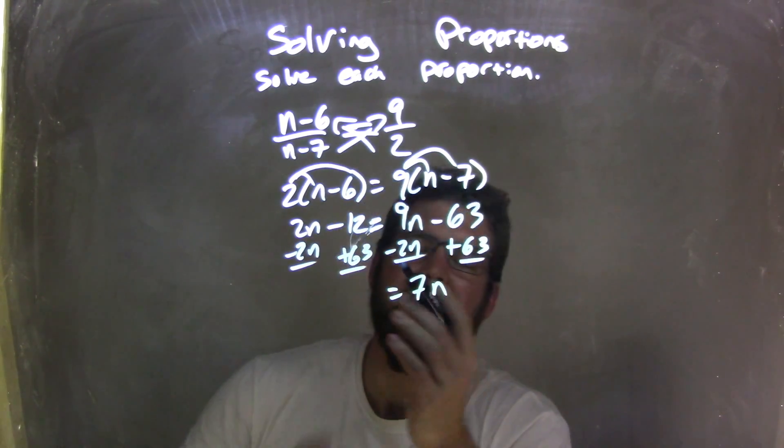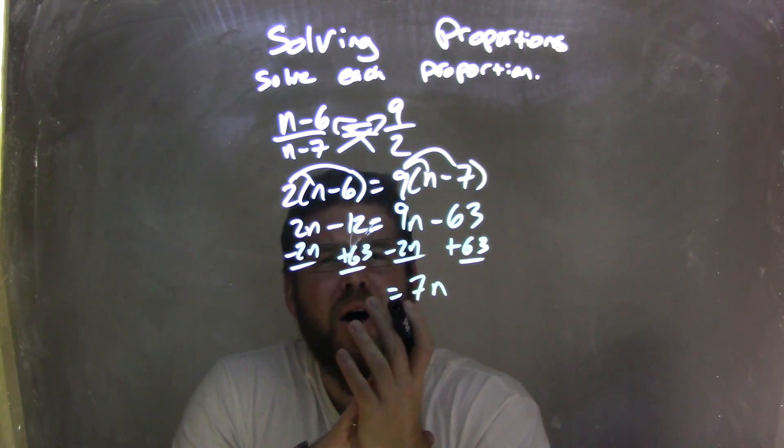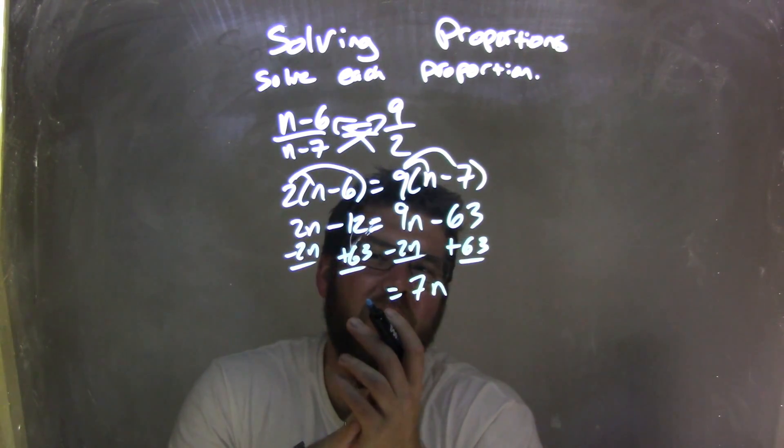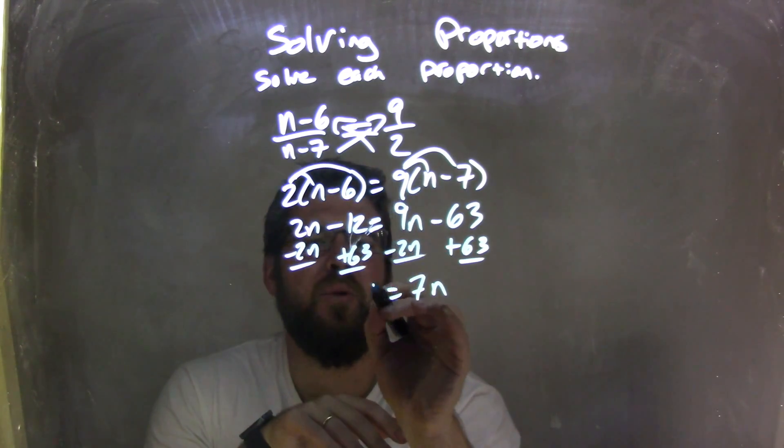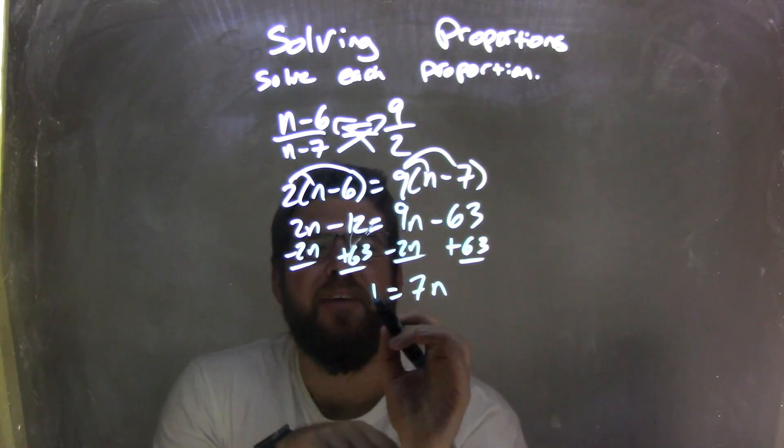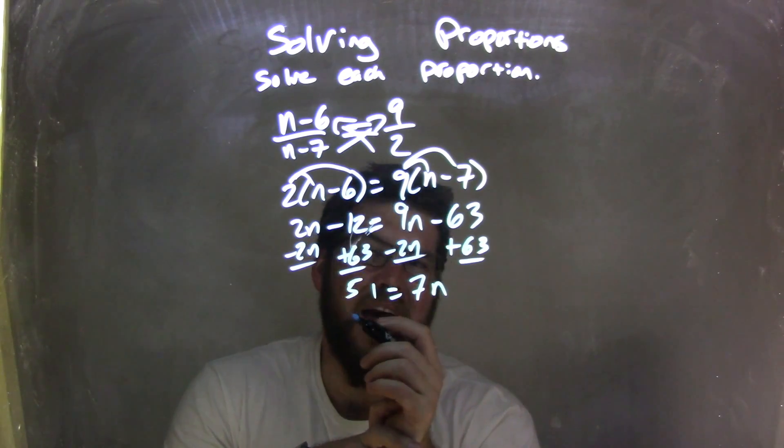And what's negative 12 plus 63? Well, that's the same thing as 63 minus 12, which really comes out to be a 1 here on the right, and a 5 on the left. So we have 51 equals 7n.